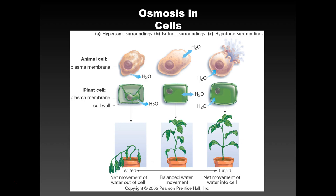Osmosis also happens in cells. If you take a plant or animal cell and put it into a solution with low concentration, the concentration is higher inside the cell, so water rushes in and causes the animal cell to burst. The plant cell has a cell wall, so it just becomes turgid — filled with water — and plants love this. This is why whenever you get hooked up to an IV, there is saline in there and not just pure water — because if there was just pure water, your cells would explode.